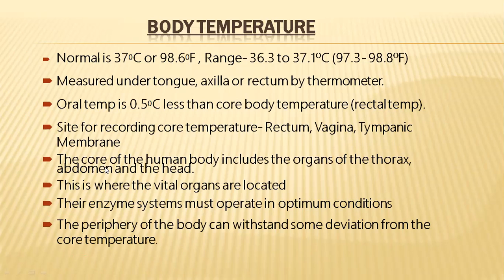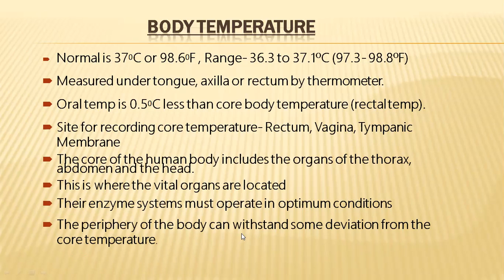All these important organs are core organs located in the thorax, abdomen, and head — so the temperature of these three regions is considered as core body temperature. Their enzyme systems must operate in optimal conditions. The periphery of the body can withstand some deviation from core temperature. Peripheral regions like skin and legs can tolerate major differences, but if core body temperature drops below normal range, we cannot be healthy.